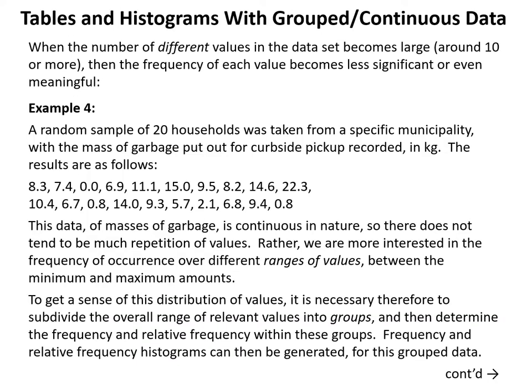When the number of different values becomes large — say around 10 or more — the frequency of each individual value becomes less significant. In example four, a random sample of 20 households records the mass of garbage put out for pickup in kilograms. This data is generally continuous in nature — the mass could range anywhere from zero upward — so there's very little repetition of specific values in the data set.